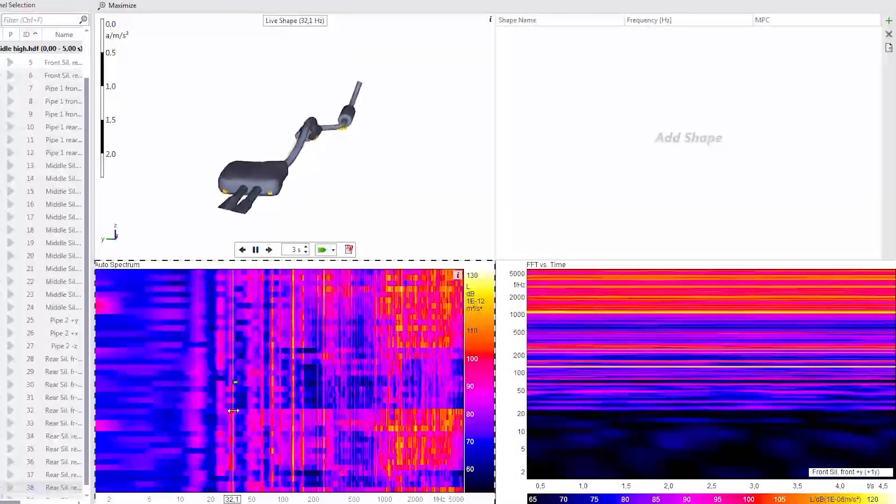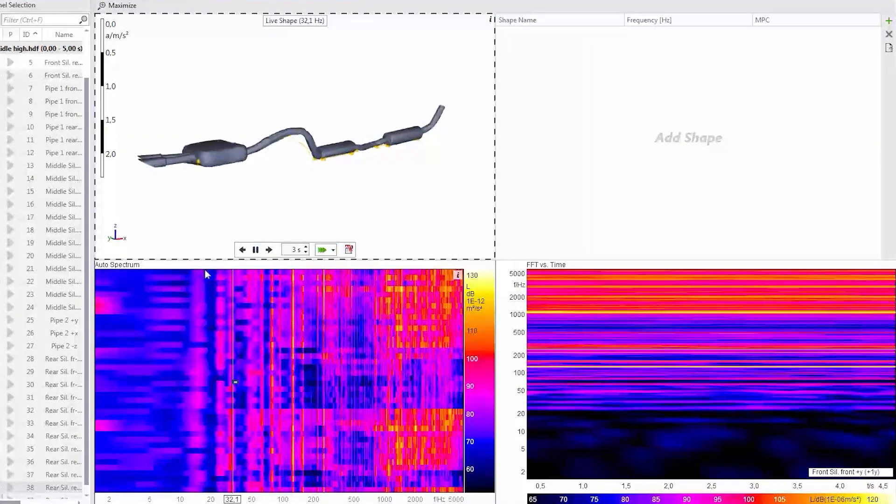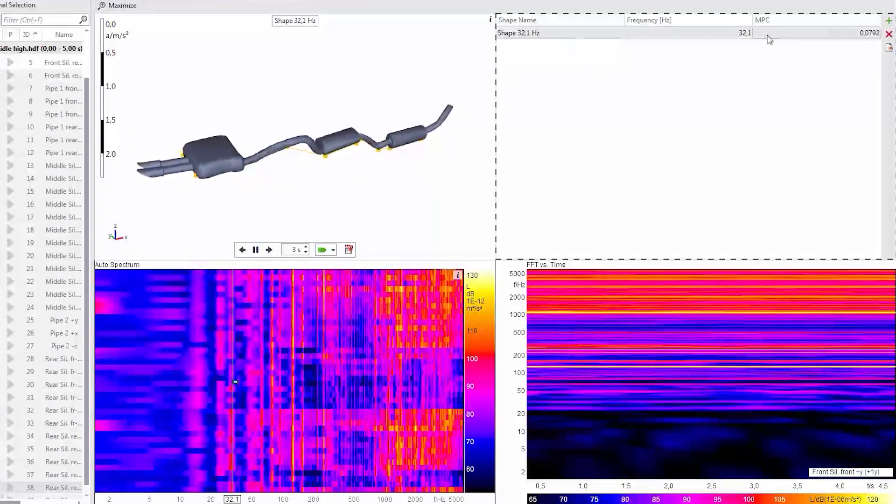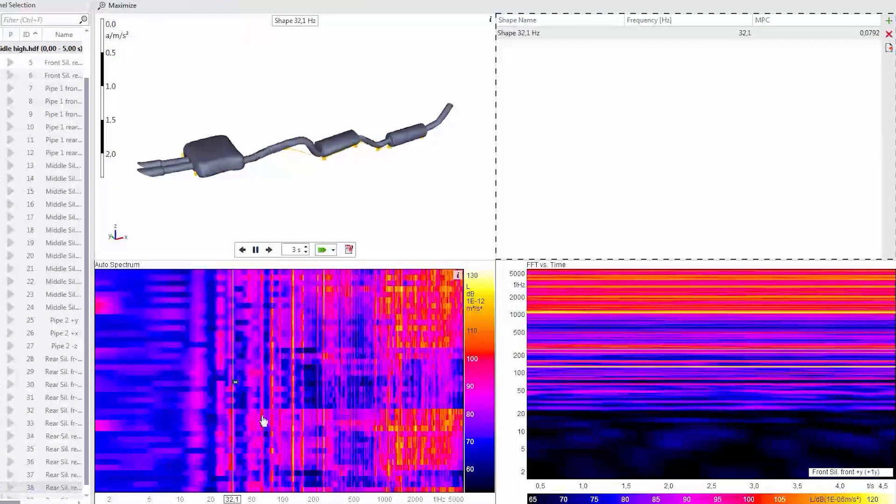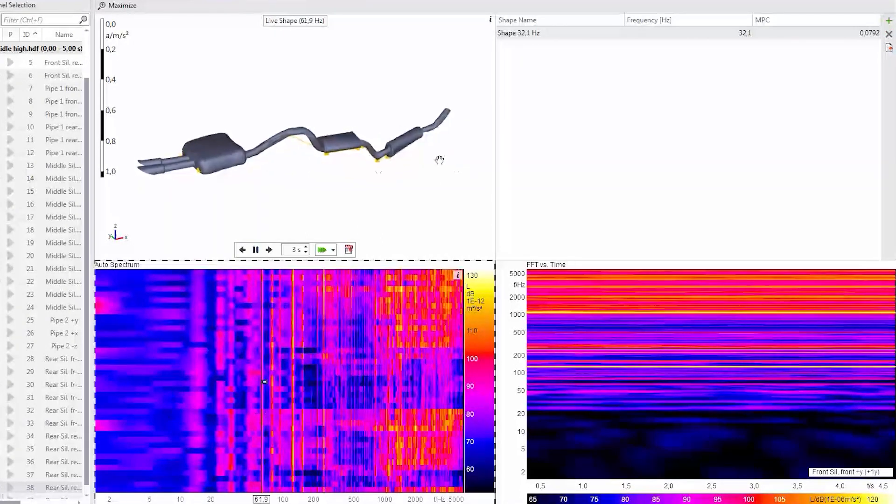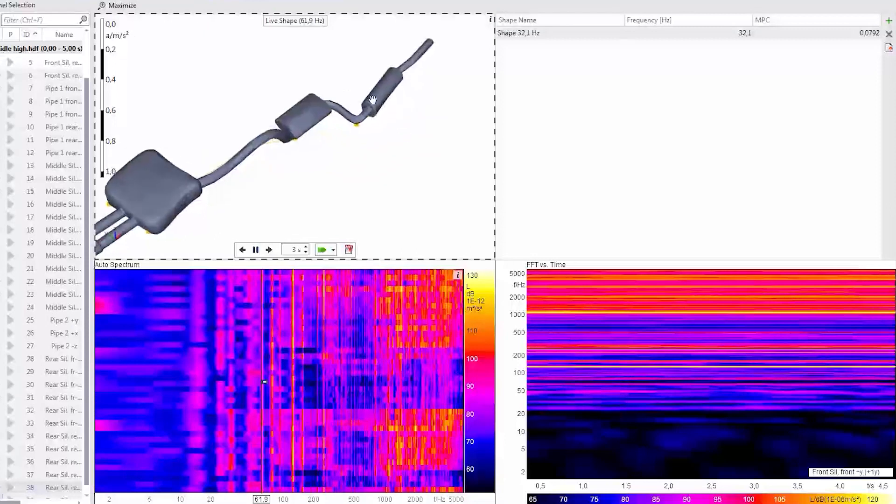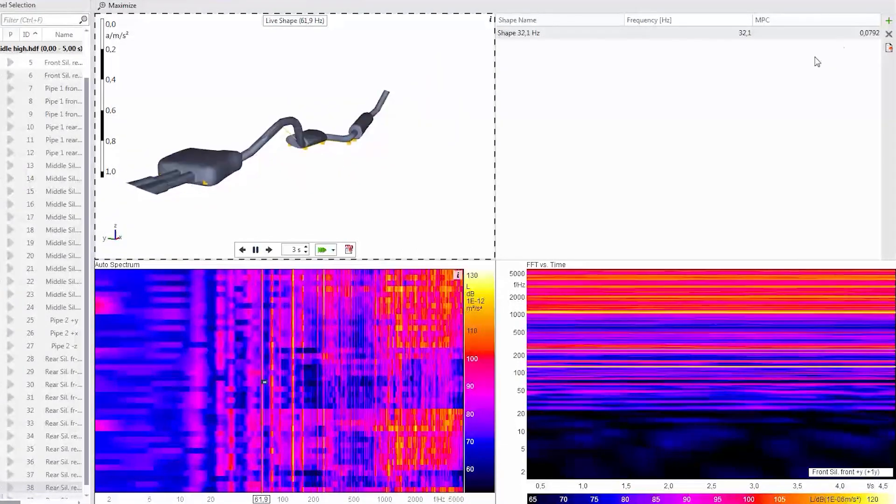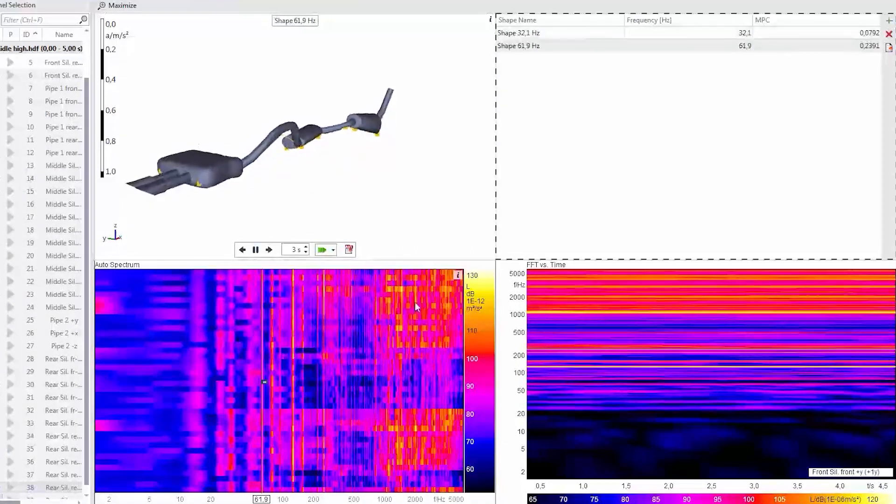Now 32 Hz. Now the middle silencer is already rattling. This is an interesting form of vibration. I just save it for now. This plus, add shape. Then I have already saved it. Now I clicked here at 62 Hz. Now it hits the front silencer. You can see a clear mode on this part. I also saved this directly to my memory.